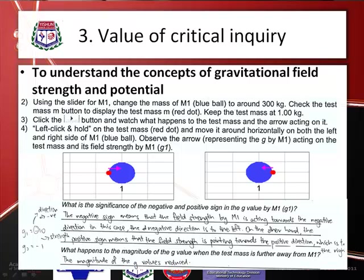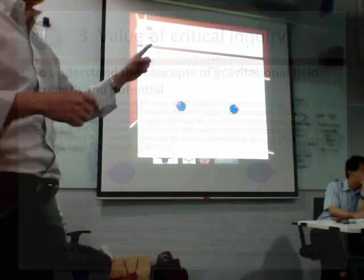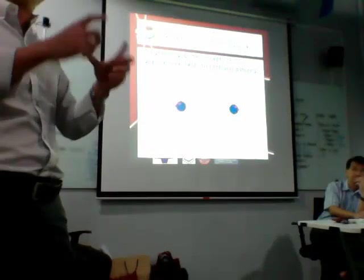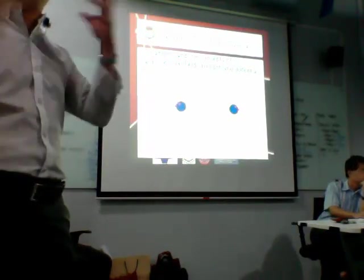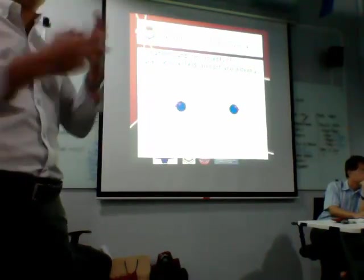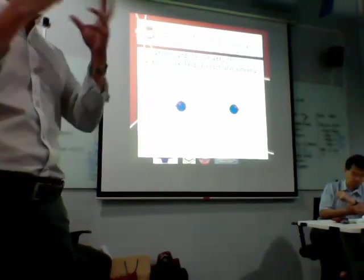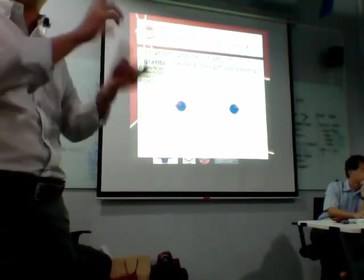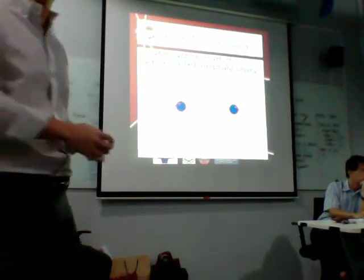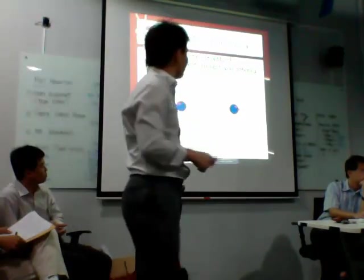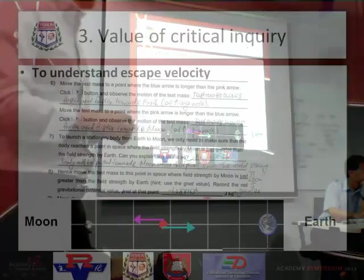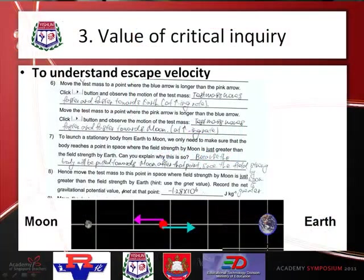Through this process, students realize that the value is negative when pointing in a certain direction. When they then explore potential using a similar approach, they find that potential is always negative. This prompts them to argue among themselves: why is there a negative sign — what is the meaning behind it? That deeper inquiry is exactly what we wanted.